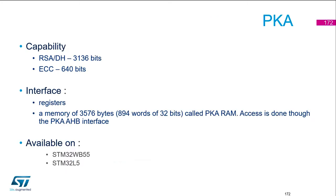Regarding the capabilities, for RSA and Diffie-Hellman we can support up to 3136 bits, and for elliptic curves we can go up to 640 bits.